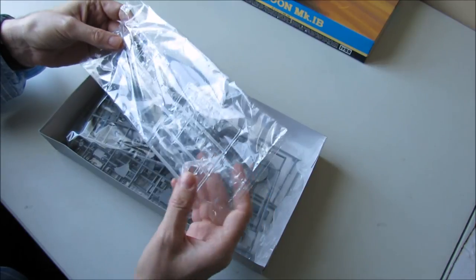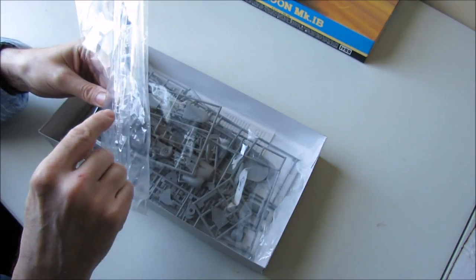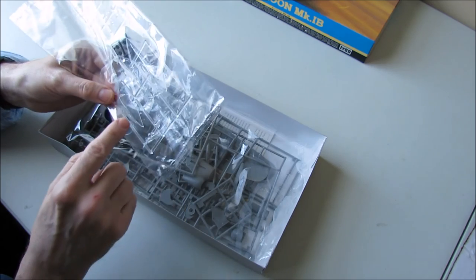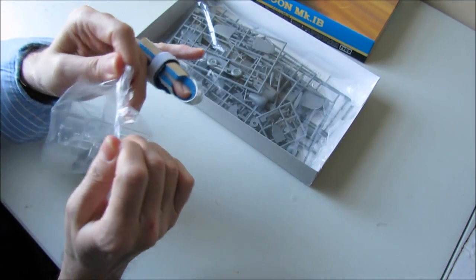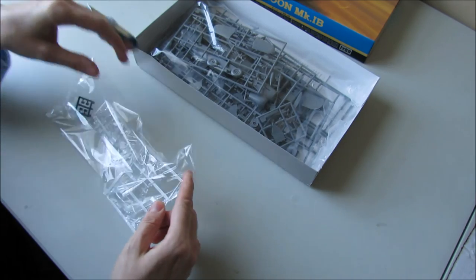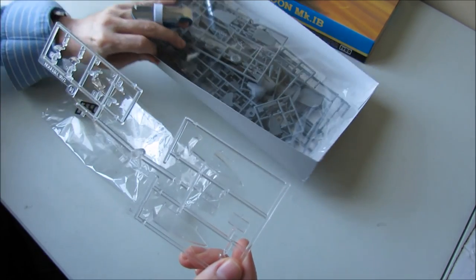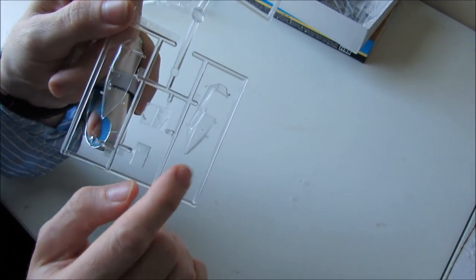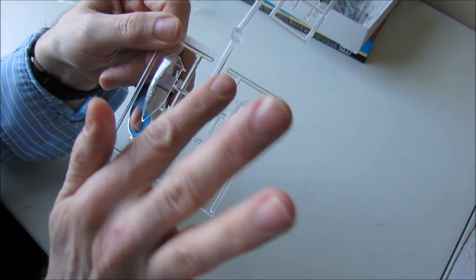Okay, so there's a bag with a clear sprue. It's got two canopies there, one that's cut open to allow you to have the open door and the open roof canopy, or you can have it in the solid style. There's the one I'm going to be using, the canopy with the cut out to use the door and the glass top that can be posed upwards.